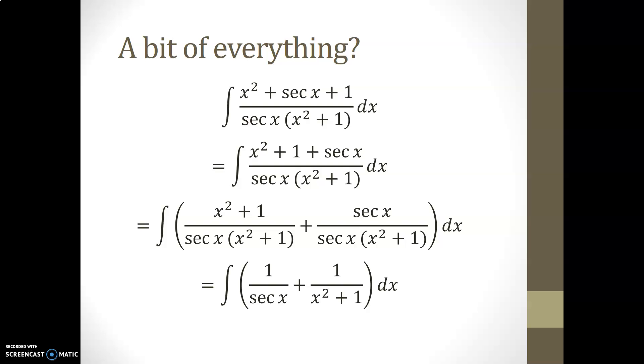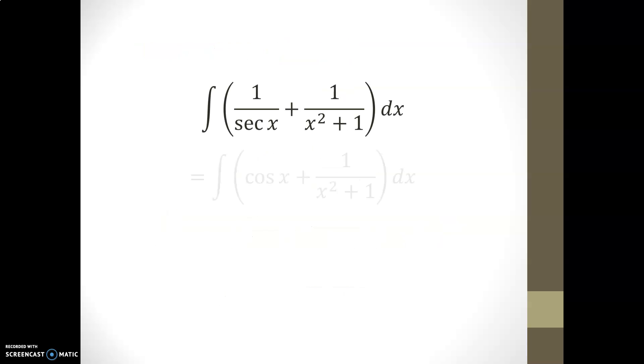In fact, even the secant x terms would be simplified from the second fraction. Here's where we can recognize trig identities. 1 over secant x is the same as cosine of x. And now we have two terms in an addition, so that we can actually treat them individually. The antiderivative of cos is sine of x, and the antiderivative of 1 over x squared plus 1 you may recognize as being the arctan of x.